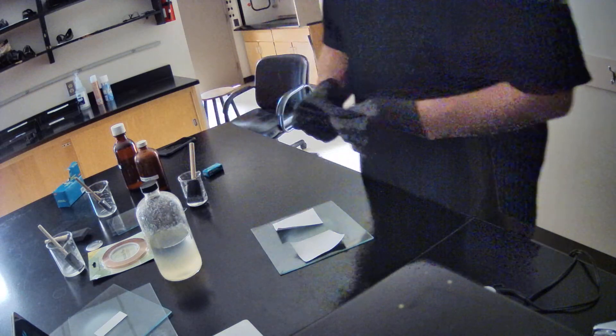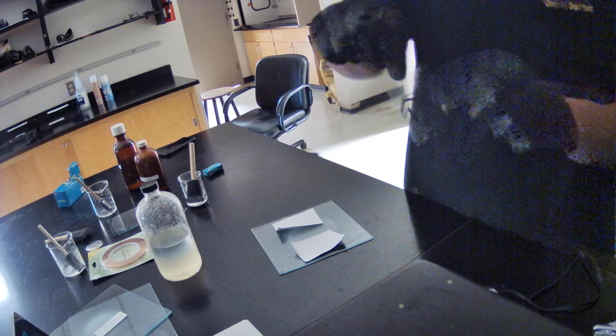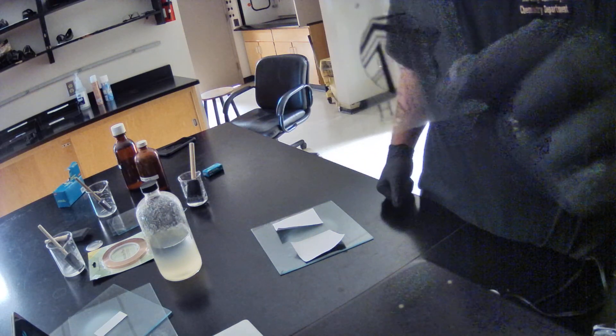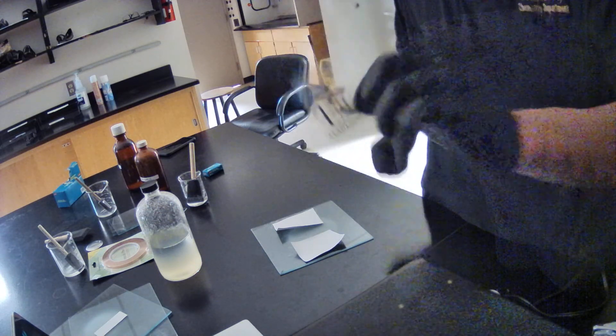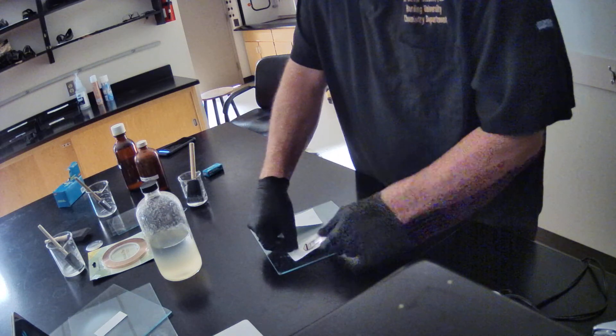So now we're going to take the image that we're going to make on our paper, okay, just the Harding logo here, printed it on transparency, and I'm going to put that on top of the sheet of paper.